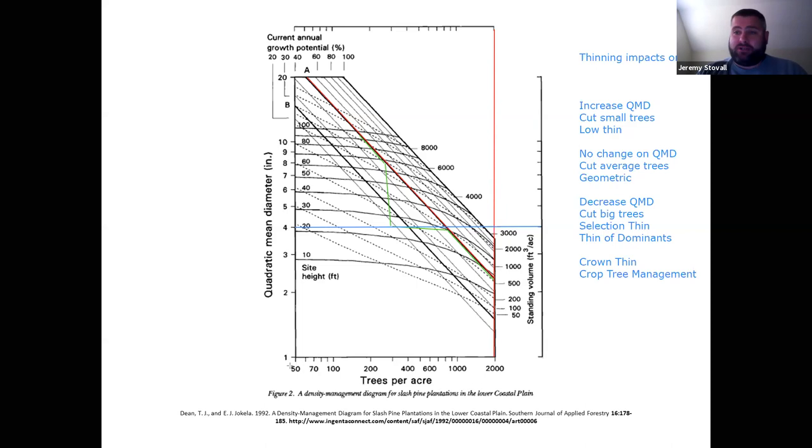With a clear cut, you end up with no trees per acre, right? And no real size. So you could do this and put a line way down to here, right? Don't bother doing that. Please don't draw lines down to zero, zero on your diagrams.